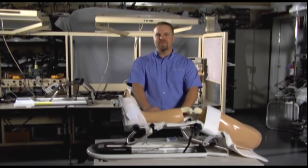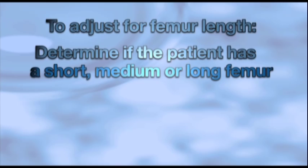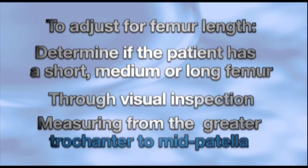Adjusting femur length may be one of the most overlooked steps in fitting the CPM machine properly to the patient. It is, however, one of the most important. To properly adjust for femur length, you must determine whether your patient has a short, medium, or long femur. This can be done by visual inspection or by measuring from the patient's greater trochanter to their mid-patella.